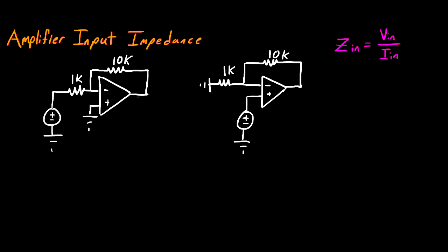In this video, we're going to be talking about amplifier input impedance. Input impedance is defined as the voltage in divided by the current in. So the current in that you have is the current that's going through that voltage source that you have as your input.